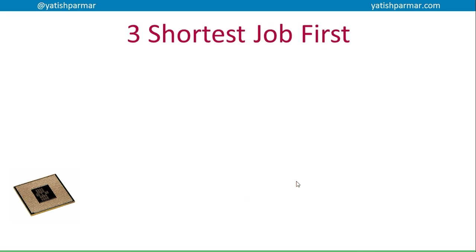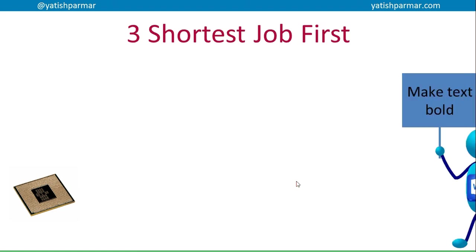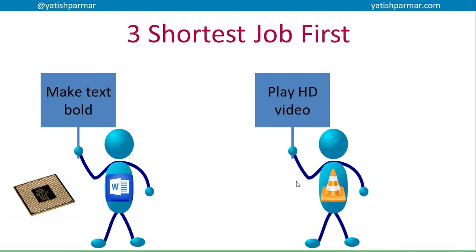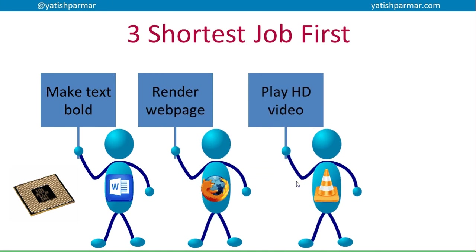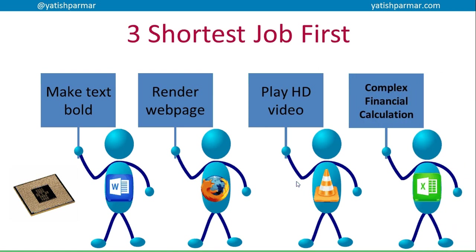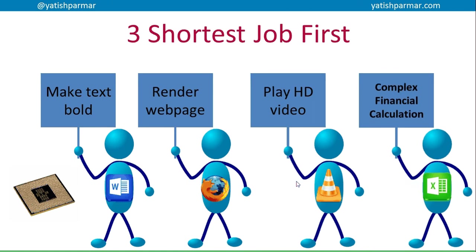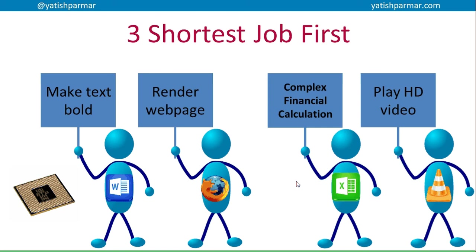A shortest job first system again works on priorities. A job comes in, it compares the jobs, and realizes that the new job perhaps is going to take less time than the previous one, so the places are changed in the ready queue. As another job comes in, the estimated time taken is compared, and if the time taken is estimated to be less than another job, then the queue is again altered to take that into consideration.